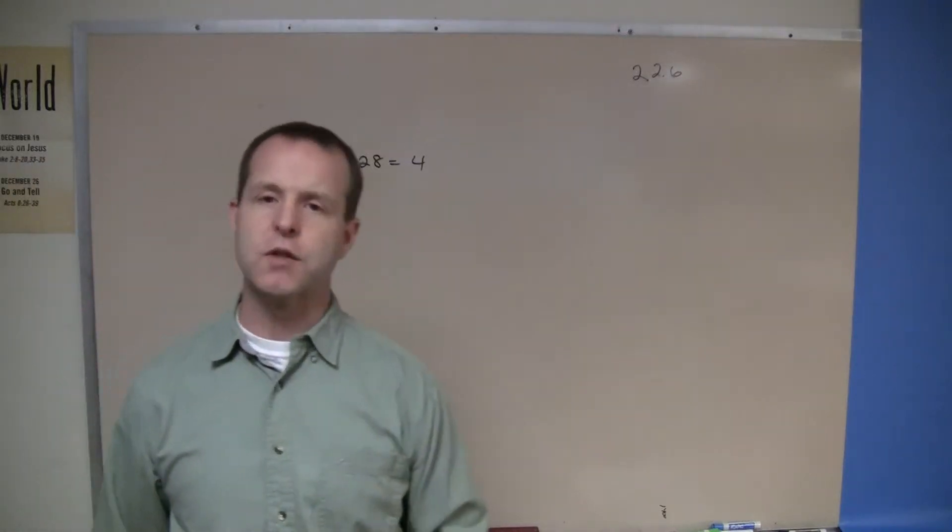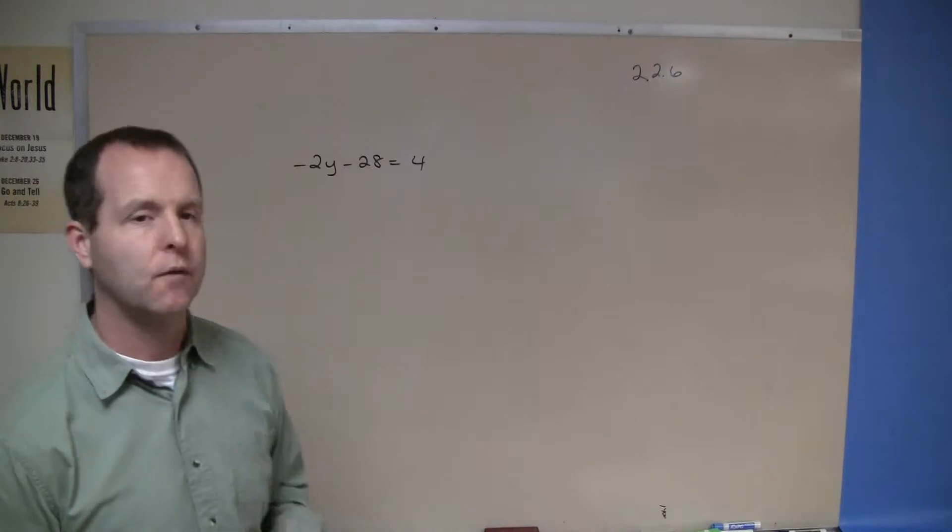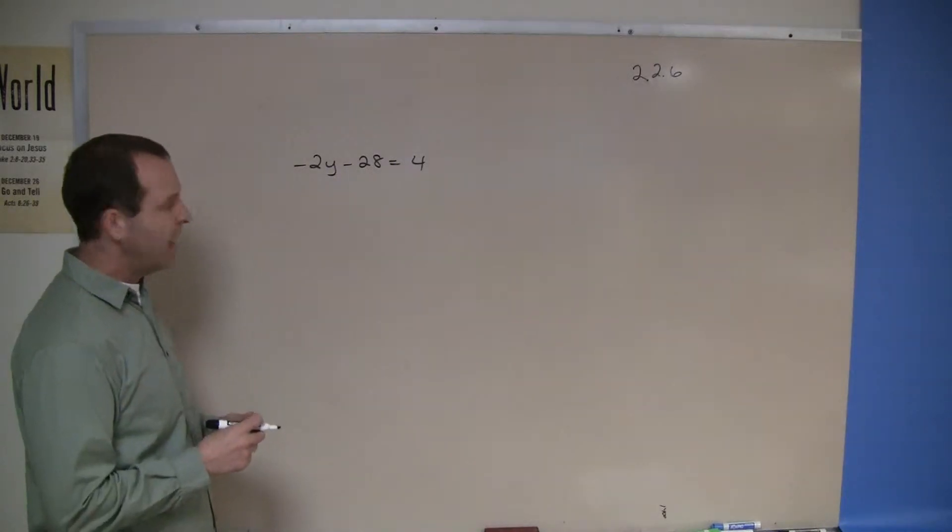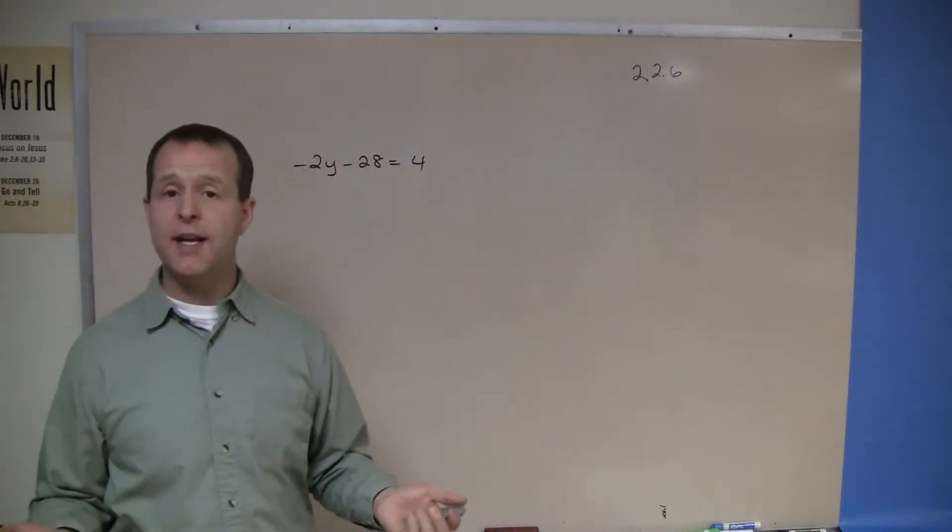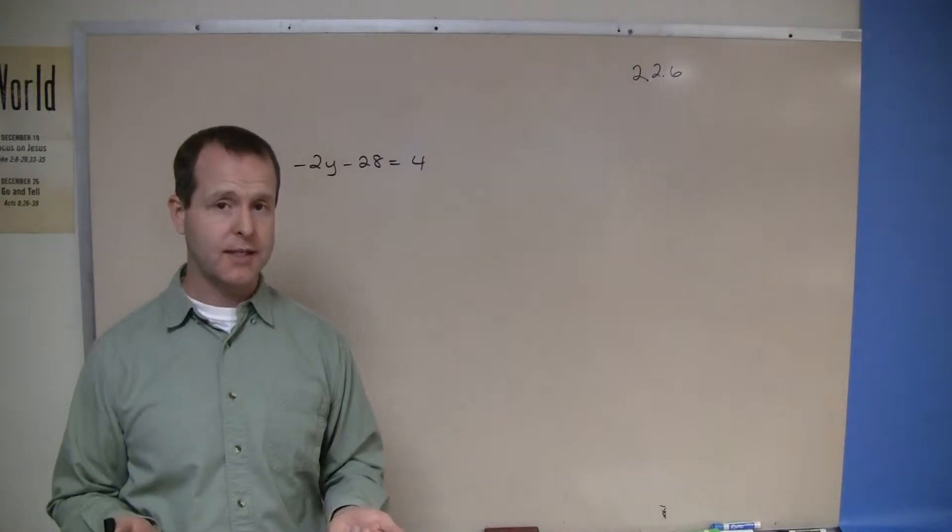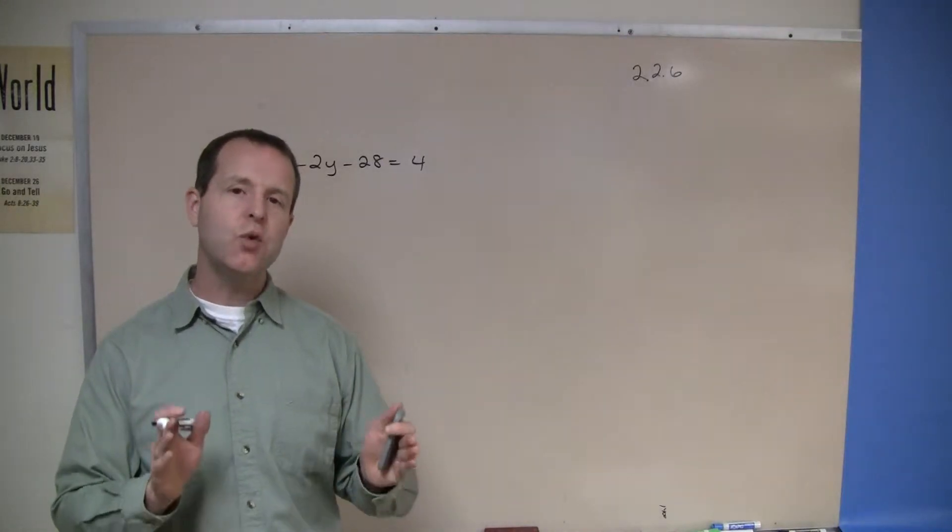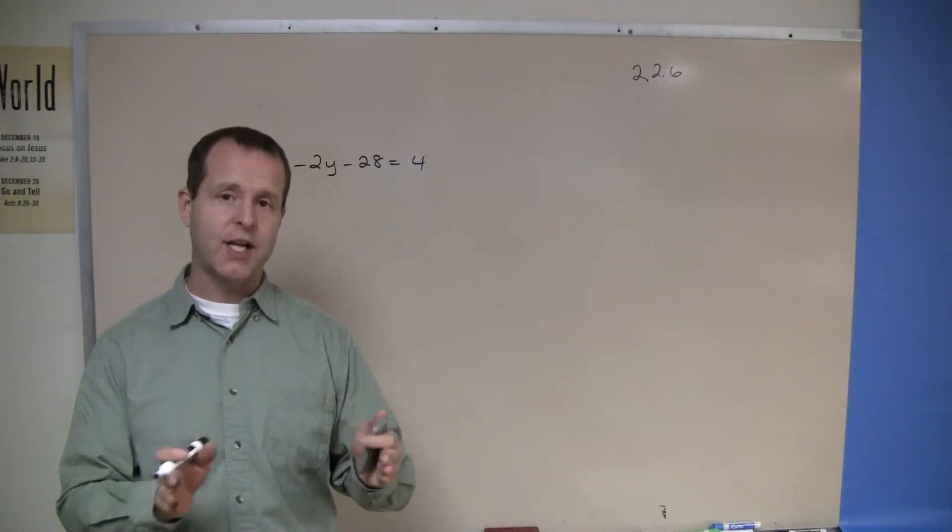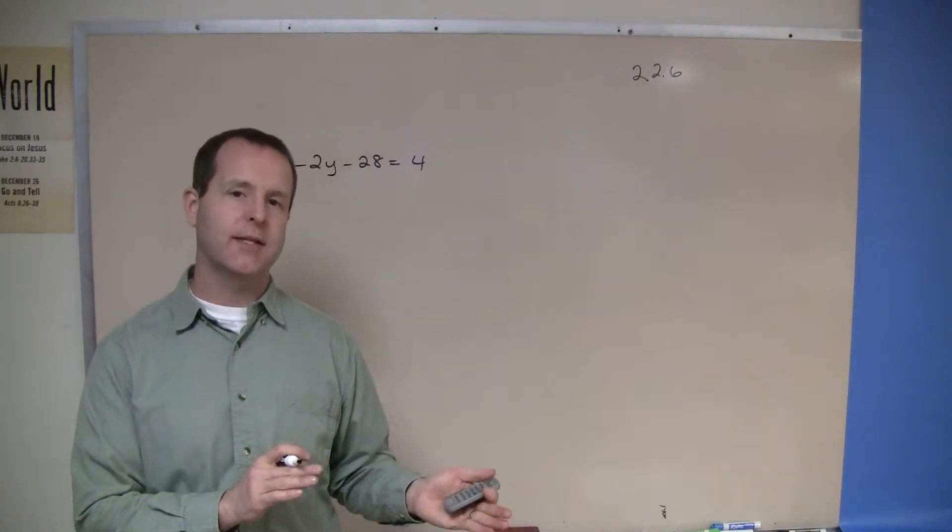Negative 2y minus 28 equals 4. I like to get y by itself. You have lots of strategies involved in what you'd like to do. And as long as you do to one side as you do to the other, you will eventually get to the answer.